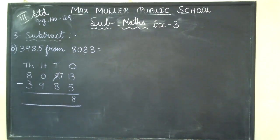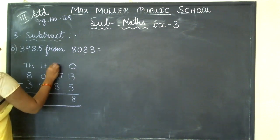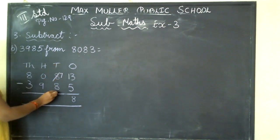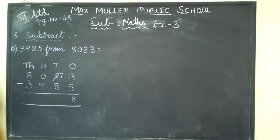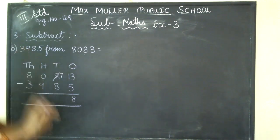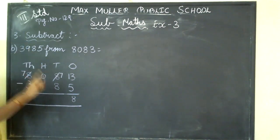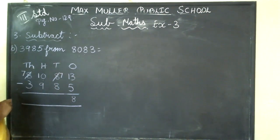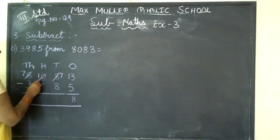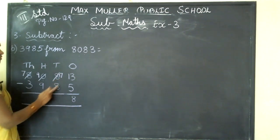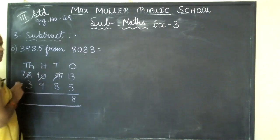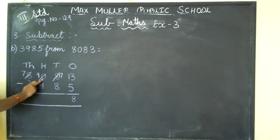Understood? Next, in the tens place: 7 minus 8 — from 7 can I minus 8? No. Go to the hundreds place. In the hundreds place, what is the number? 0. So I cannot borrow from 0. I will go to the thousands place. In the thousands place, what is the number? 8. From 8 if I minus 1, I get 7 — write 7 here. I will carry to the hundreds place, so it becomes 10. From 10 if I minus 1, how much? 9 — write 9 in the hundreds place.